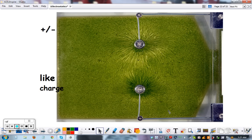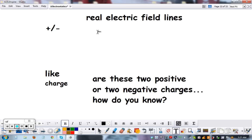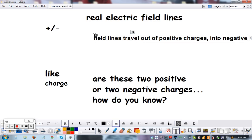That's the first thing. Field lines travel away from or out of positive and into negative charges. That's why they attract. Add that to your notes.